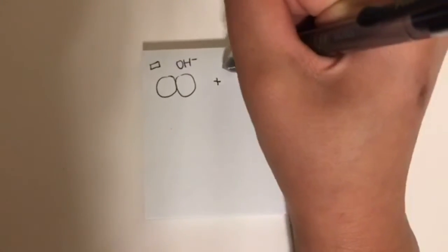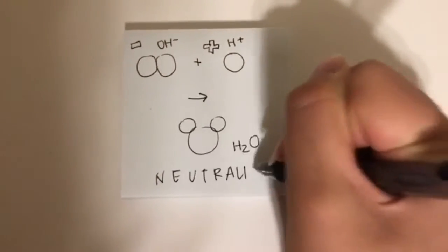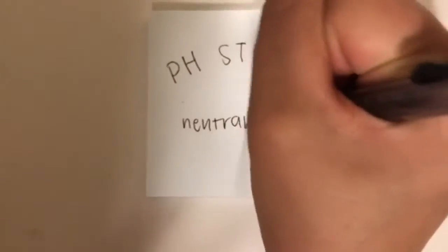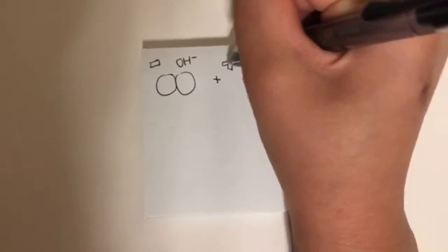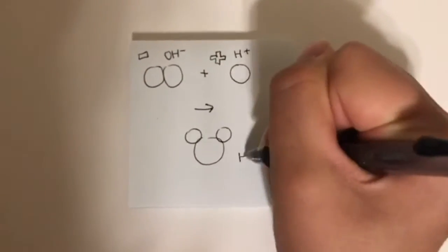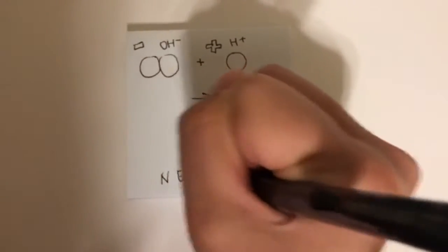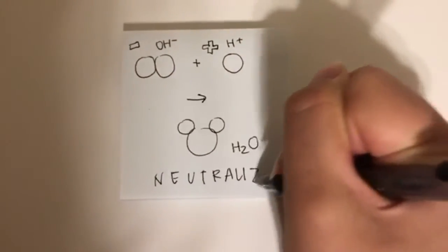So we say acids and bases will neutralize each other. Electrons will be shared between one another. H2O is amphoteric — it's a pH story when they neutralize. Acids and bases will neutralize each other. H2O is amphoteric, it's a pH story when they neutralize.